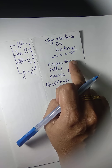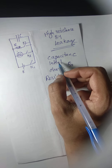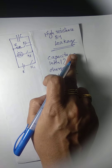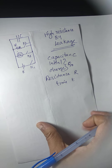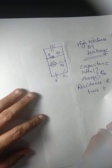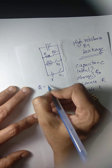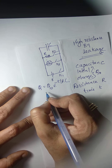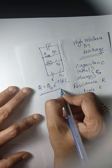We are assuming a capacitor of capacitance C having an initial charge Q0, with resistance R for a time T. The charge remaining on the capacitor, which we have already studied, is Q = Q0 × e raised to minus T by RC.